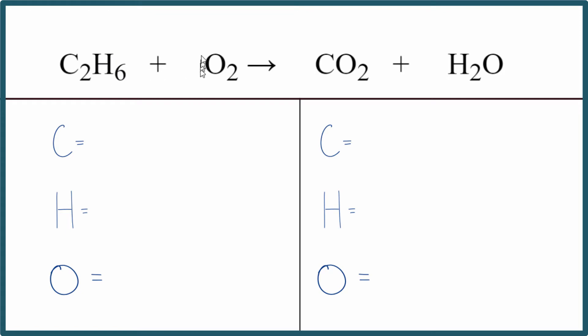We have a hydrocarbon plus oxygen, and in the products we get carbon dioxide and water. So let's count the atoms up and balance the equation. We have two carbon atoms, six hydrogen atoms, and two oxygen atoms in the reactants.